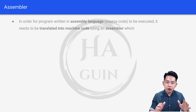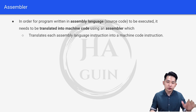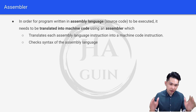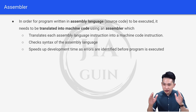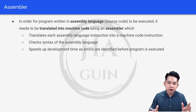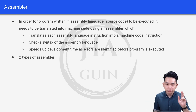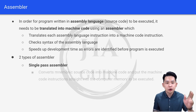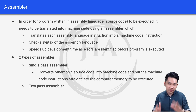Now let's look at assemblers — we covered this in chapter 4, so this is a quick recap. For a program written in assembly language to be executed, it needs to be translated into machine code using an assembler, which translates each assembly language instruction into a machine code instruction, checks the syntax of the assembly language, and speeds up development time as errors are identified before the program is executed. There are two types: a single pass assembler converts mnemonic source code into machine code and puts the instructions straight into computer memory to be executed. For the two pass assembler, you can refer back to my chapter 4 videos.